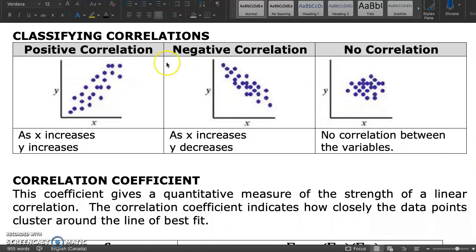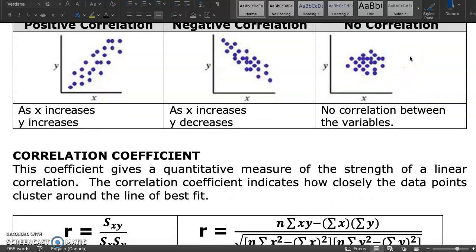When we are classifying these types of relationships, there are three types: positive, negative, and no correlation. As X increases, what is happening to Y? If Y is increasing, then we have a positive correlation. As X increases, if Y is decreasing, this is said to be a negative correlation. And if there is no correlation between the variables, we say there is no correlation.